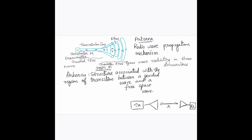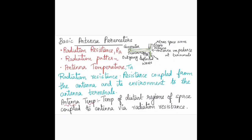An antenna can also be defined as a transducer which converts a guided wave to a free space wave, or a free space wave to a guided wave. The antenna appears from the transmission line as a two-terminal circuit. Consider a simple dipole antenna formed by flaring the transmission line out to both sides — this acts like a dipole antenna.